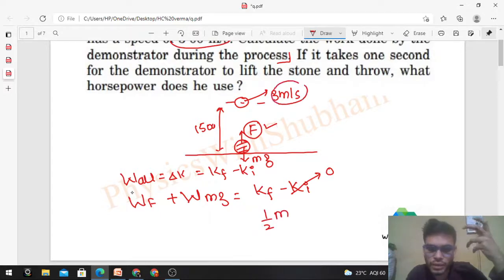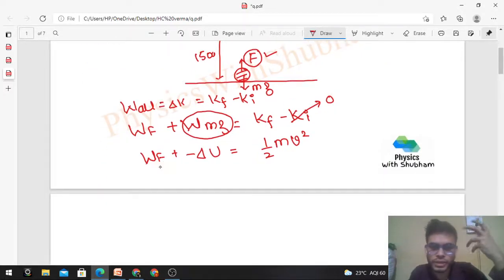V is 3, so v squared. Work done by mg is minus the change in gravitational potential energy, because mg is a conservative force. So work done by F, which we need to find, equals half mv squared plus delta U.